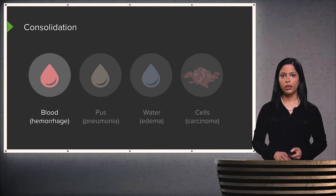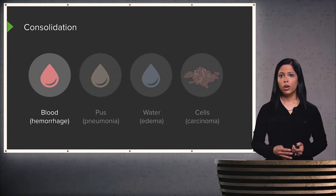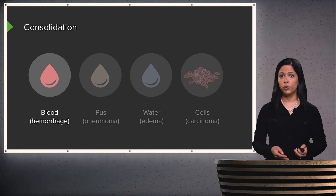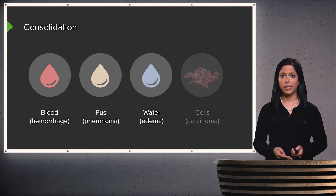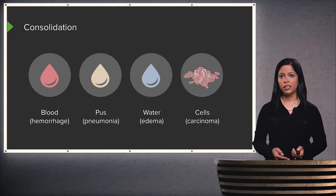Consolidation can occur from many different things. The four major causes are: blood or hemorrhage within the alveolar spaces; pus, which is an example of pneumonia; water, which can fill the alveolar spaces as a result of pulmonary edema; and cells from carcinoma.